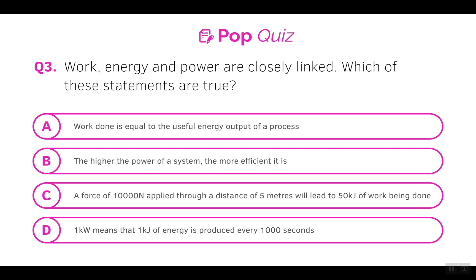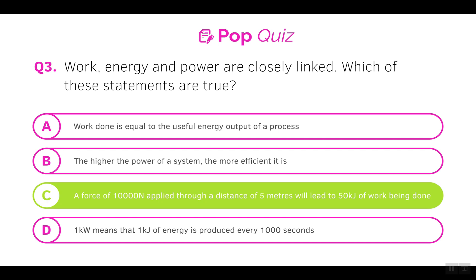Let's have a go at a slightly different question. We've been given four statements and need to decide which are true — pause the video now to attempt this. The answer is C, because work done equals force times distance, which is 10,000 times 5, giving 50 kilojoules. Statement A is false since some output will still be wasted. Statement B is also false because a very large system can convert lots of energy but this will be inefficient. Statement D cannot be the answer since it implies 1 kilojoule is produced every second.